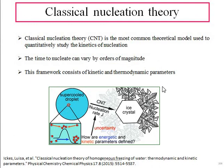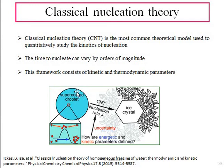The time to nucleate can vary by orders of magnitude, and CNT provides a framework based on kinetic and thermodynamic parameters. The figure shown represents the Classical Nucleation Theory — a supercooled droplet forms an initial nucleus, then nucleation progresses and the rate can be calculated with the help of CNT. From this, ice crystals are formed from the nucleus.